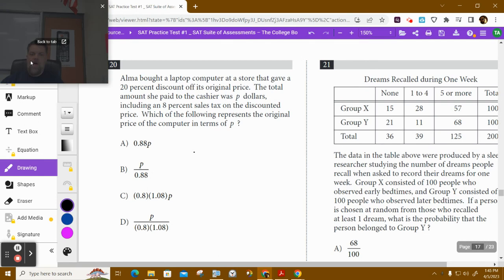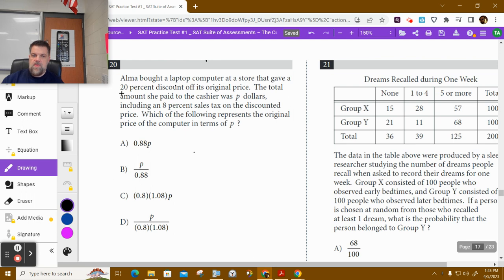Alright, so for number 20 it says Alma bought a laptop computer at a store that gave a 20% discount off of its original price. The total amount she paid to the cashier was p dollars, including an 8% sales tax on the discounted price. Which of the following represents the original price in terms of p?